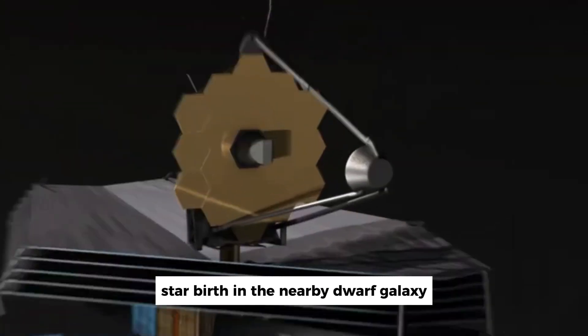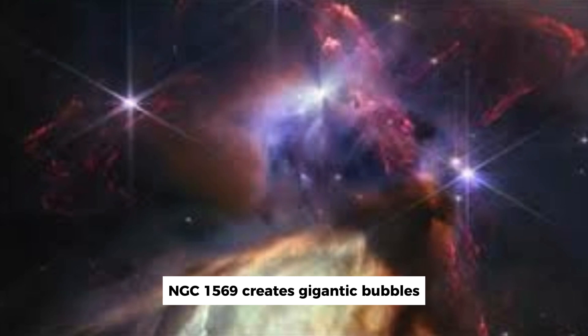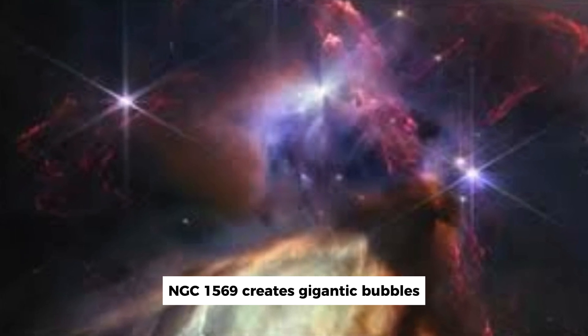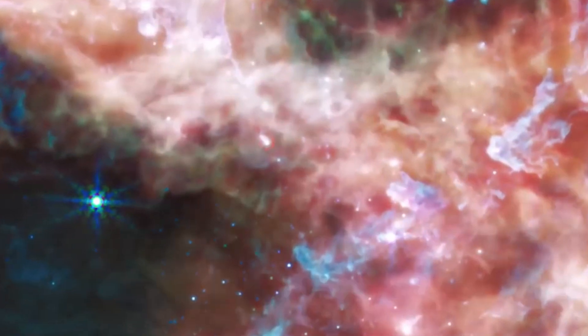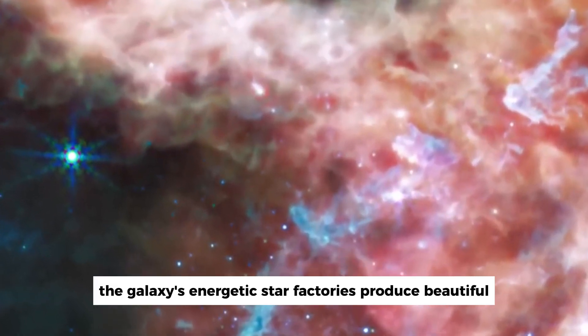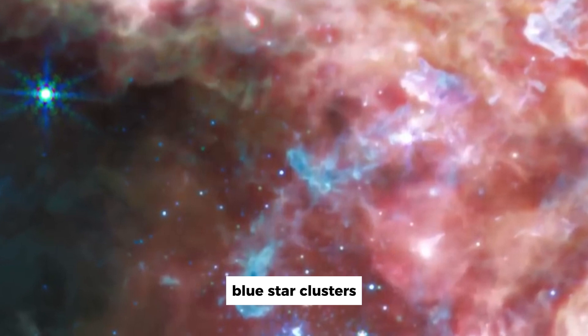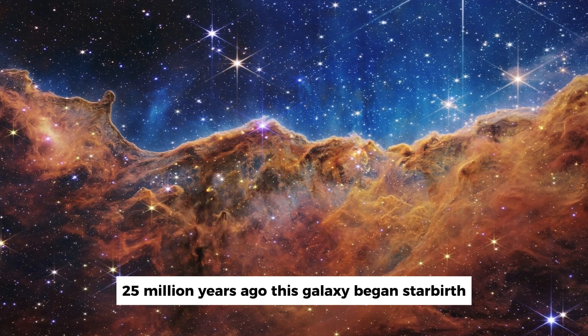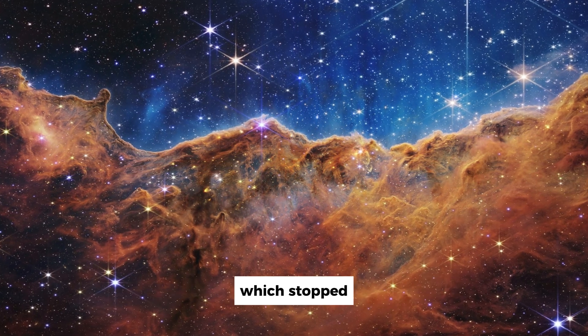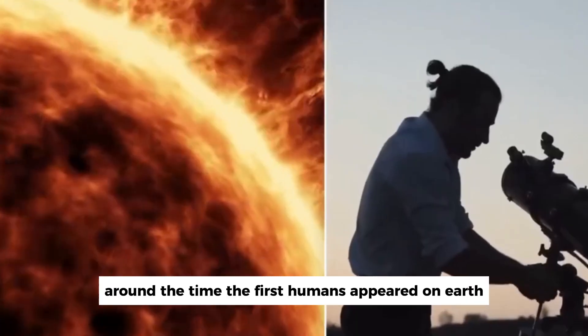Star birth in the nearby dwarf galaxy NGC 1569 creates gigantic bubbles and super bubbles that fill the galaxy's main body. The galaxy's energetic star factories produce beautiful blue star clusters. 25 million years ago, this galaxy began star birth, which stopped around the time the first humans appeared on Earth.